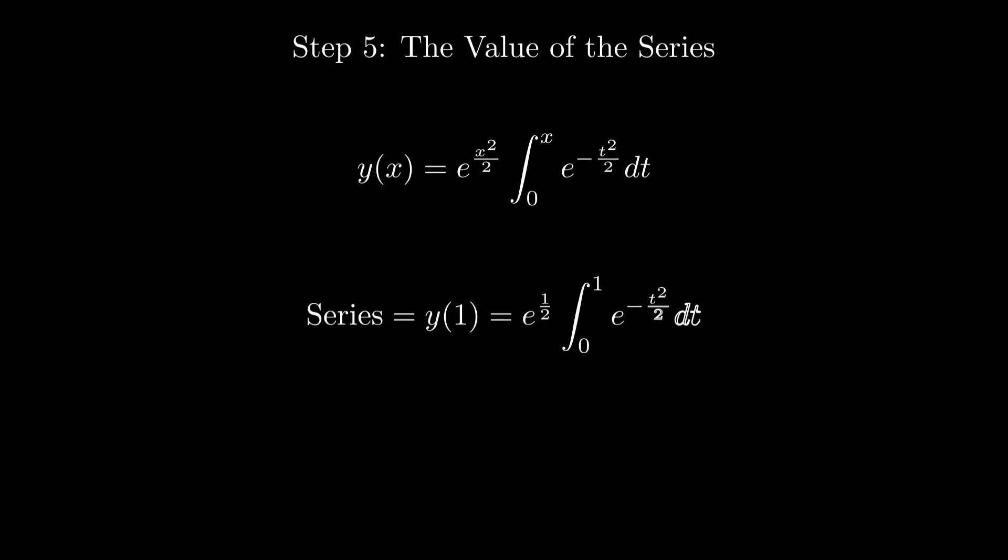Therefore, the final generating function is y(x) equals e to the x squared over 2 times the integral from 0 to x of e to the negative t squared over 2, dt. Evaluating at x equals 1, we get our original series value: e to the 1 half times the integral from 0 to 1 of e to the negative t squared over 2.